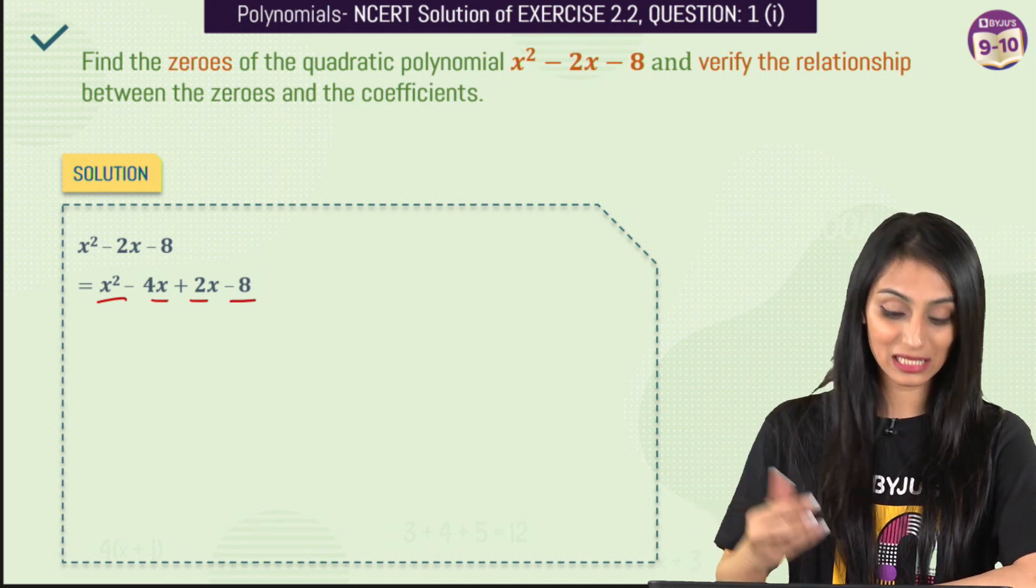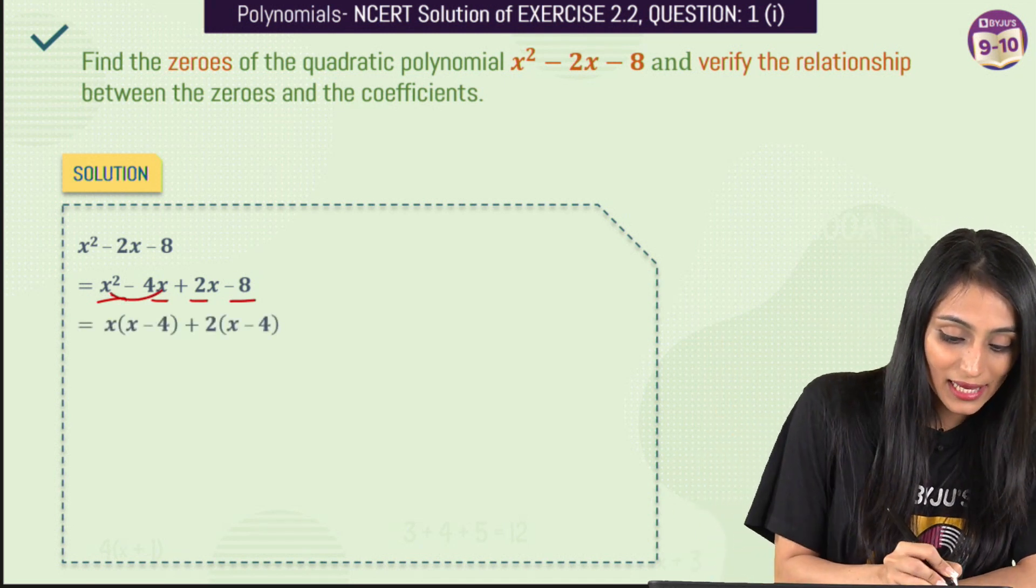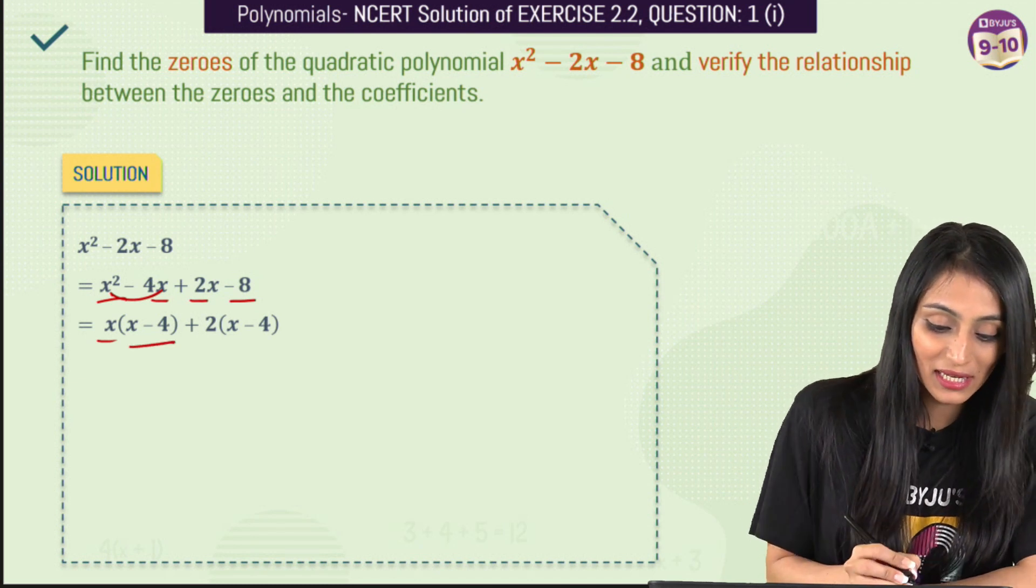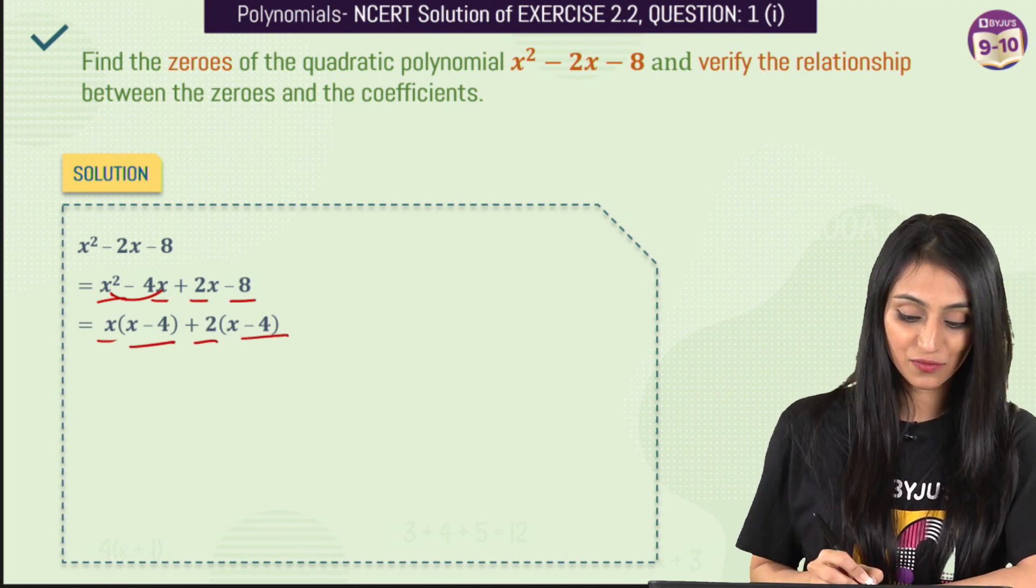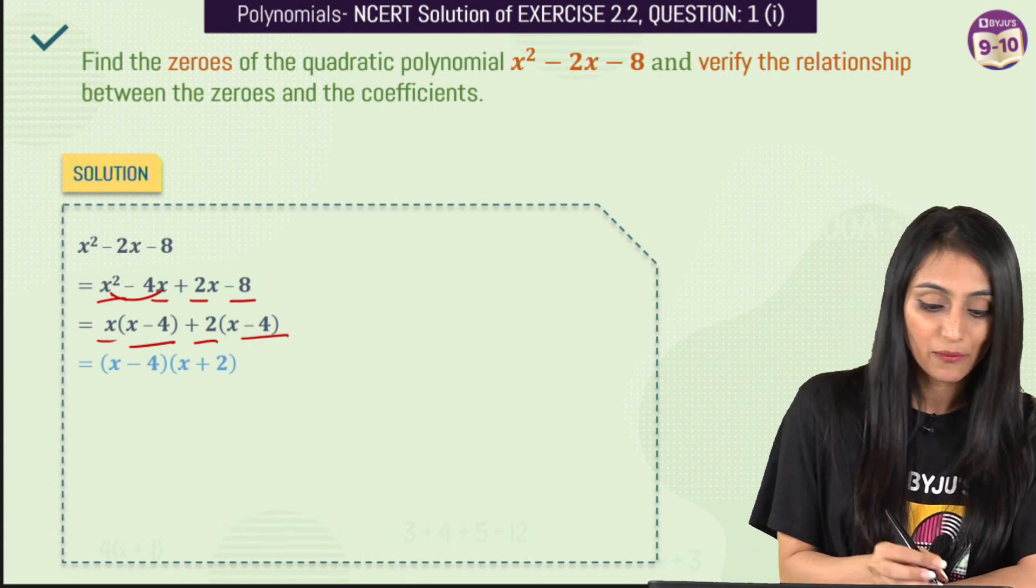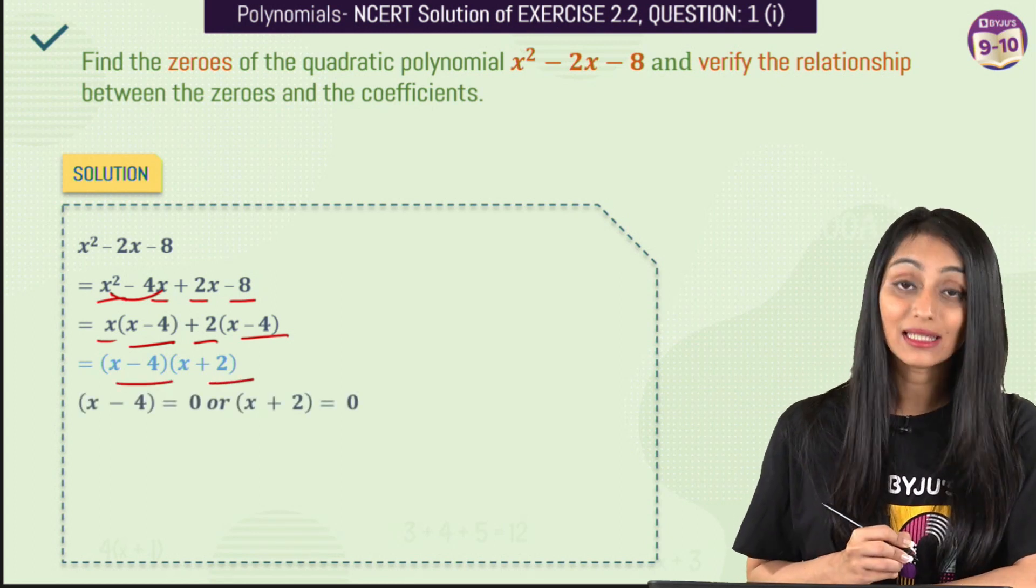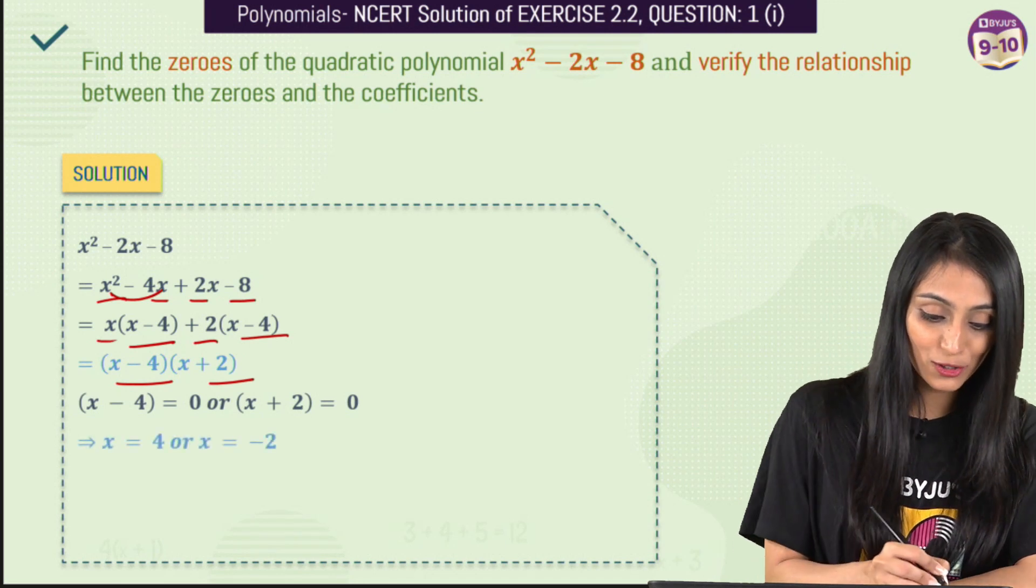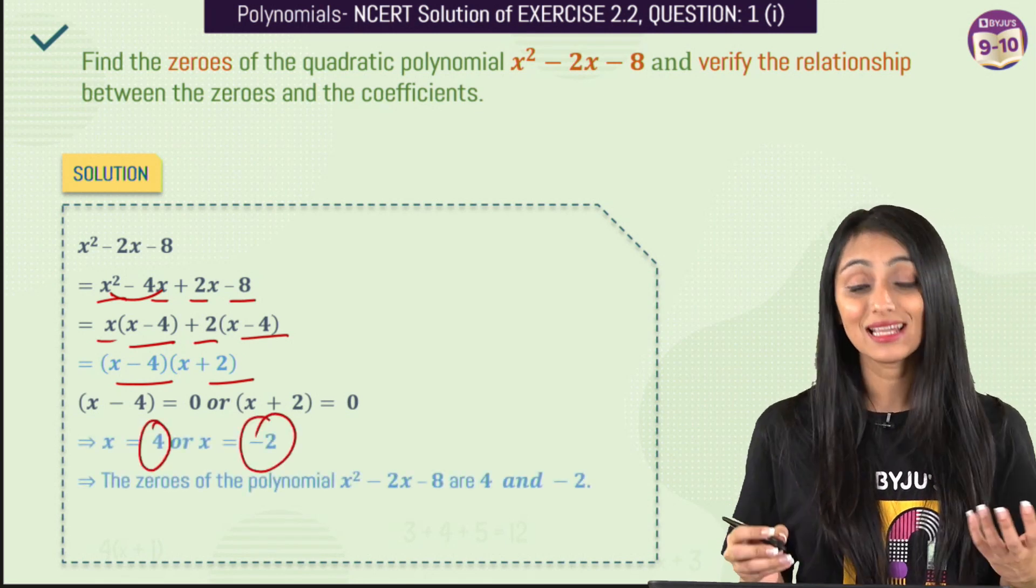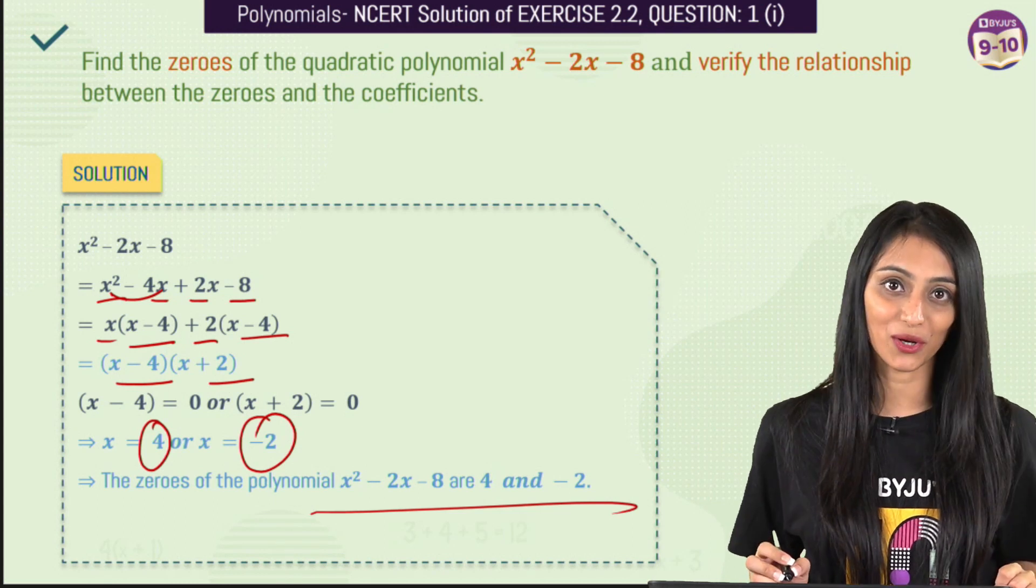Now we are going to take common from the consecutive term, so that's going to be x would be common from here, so this would be x minus 4 plus 2x minus 4. So we get two factors which is x minus 4, x plus 2. Now to get the zeros, we have to equate each one of them with 0 and we get the values of x that is 4 and minus 2 which is nothing but these are the zeros of this quadratic polynomial.